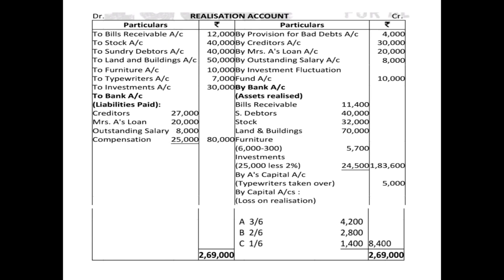Then to bank account for liabilities paid: creditors 10% less — paid 27,000; Mrs. A's loan in full since no information was given; same with outstanding salary; and unrecorded compensation paid 25,000. Total liabilities paid were 80,000. On the credit side: by provision for bad debts 4,000; by creditors 30,000; by Mrs. A's loan 20,000 (not a partner); by outstanding salary 8,000; by investment fluctuation fund 10,000. Then assets realized by bank account: bills receivable 11,400, sundry debtors 40,000, stock 32,000, land and buildings 70,000, furniture net 5,700, investment net 24,500 — total assets realized 1,83,600.